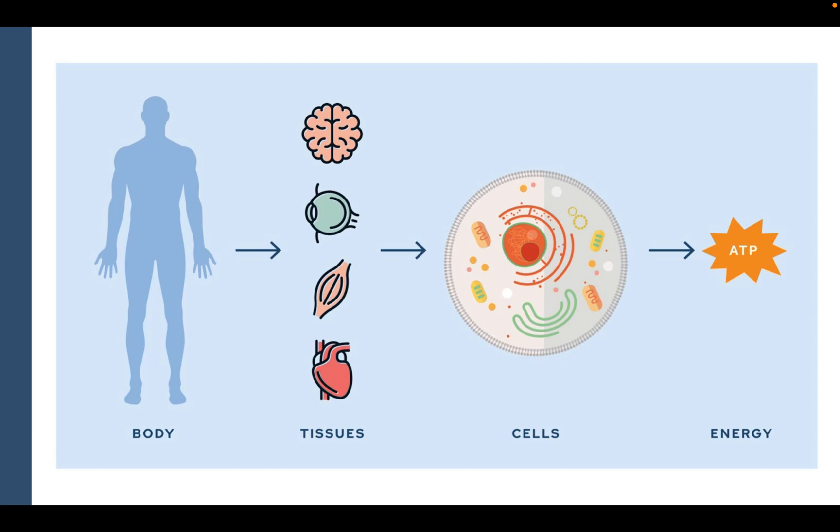Our bodies are comprised of tissues. We have brain tissue, eye, muscle, heart, and so on. Every tissue has a function. For instance, our heart's function is to circulate blood to the lungs and then to the rest of our body.